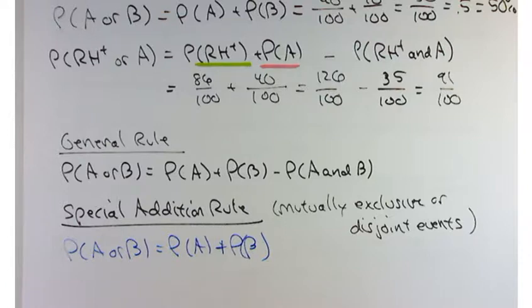Let's practice this a little bit, understanding mutually exclusive or disjoint events with a couple of examples from the book.